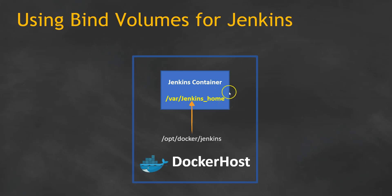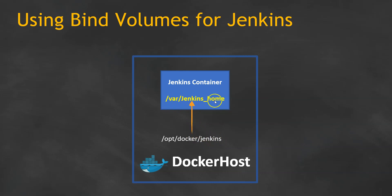Similarly, we are going to use bind volumes or host volumes. In this case, we are going to use /opt/docker/jenkins as the directory. We will associate this directory with /var/jenkins_home. We will create a new Jenkins container in parallel using the same directory, so that if I create one Jenkins job in one container, we can see the same in the other container as well.